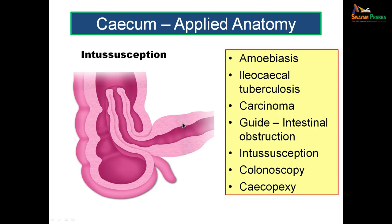In applied anatomy, a mass in the right iliac fossa involving the cecum requires ruling out amoebiasis (parasitic infection by Entamoeba histolytica), ileocecal tuberculosis, or carcinoma of the cecum. The cecum also acts as a guide in intestinal obstruction: if the cecum is filled with contents, suspect large intestinal obstruction; if empty, suspect small intestinal obstruction.